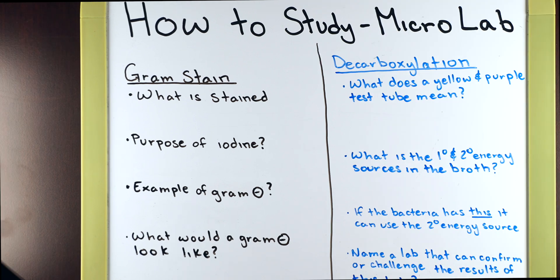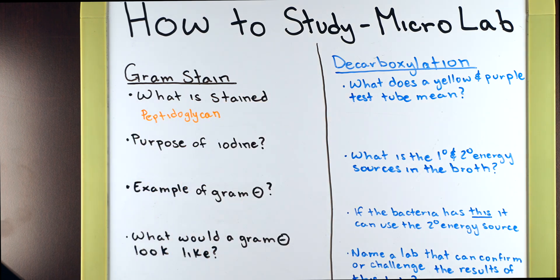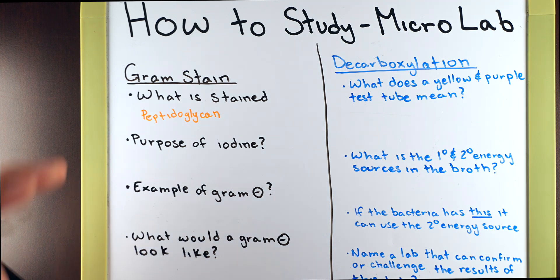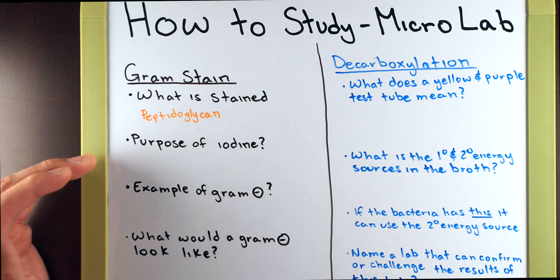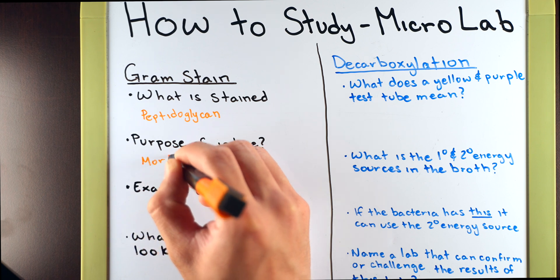The first question that should be asked at this station is: what is stained? And the answer to that is the peptidoglycan. So whether it is gram positive or gram negative, the thing that we are staining here is the peptidoglycan. Then it's going to ask you: what is the purpose of iodine? We're not even touching what bacteria we have here — we're just going through the procedures. Do you remember what step we added iodine and what does it do? The answer is it acts as the mordant.